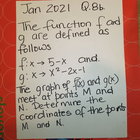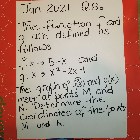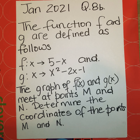Hey guys, welcome back to my channel. This video was requested by a past student of mine from grade 9. It's from the January 2021 exam, question 8b. A function f and g are defined as follows: f of x is 5 minus x, and g of x is x squared minus 2x minus 1. The instruction says the graph of f of x and g of x meet at points M and N.